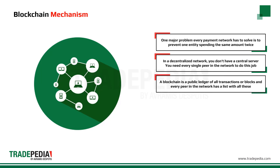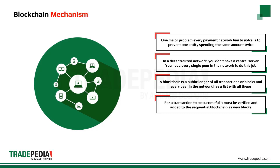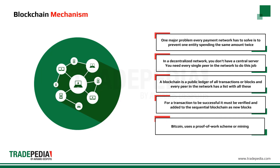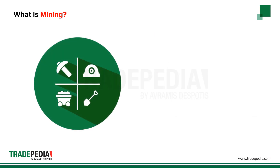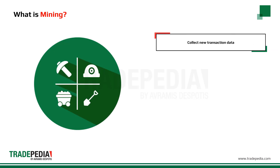A blockchain is a public ledger of all transactions, or blocks, and every peer in the network has a copy of all of these. A transaction is a file that says, for example, 'Avramis gives 100 Bitcoin to Mario,' and is signed by Avramis' private cryptographic key and subsequently broadcast to the entire Bitcoin network for verification. The transaction is known almost immediately by the whole network, but only after a specific amount of time it gets confirmed.